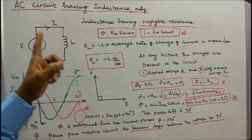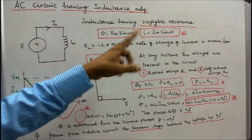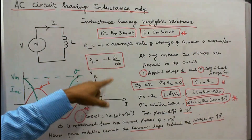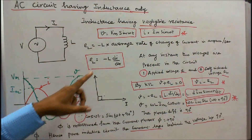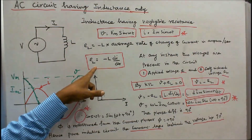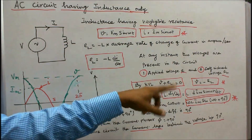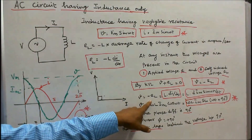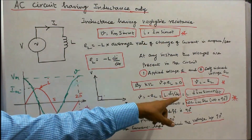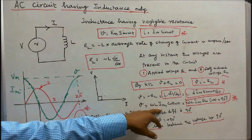The self-induced EMF E_L equals −L × (di/dt), the average rate of change of current in amperes per second. At any instant, two voltages are present in the circuit: the applied voltage V and the self-induced EMF E_L. According to Kirchhoff's voltage law, V + E_L = 0, so V = −E_L = L × (di/dt). Since i = Im sin(ωt), differentiating gives V = ω × L × Im × cos(ωt).